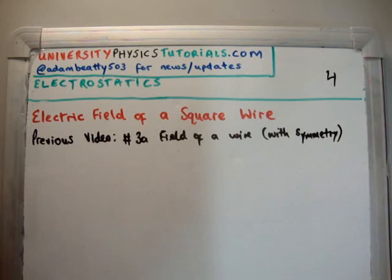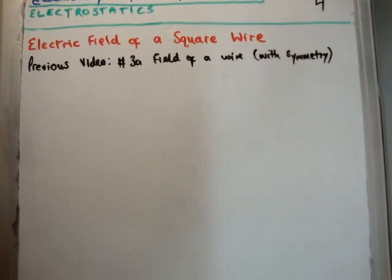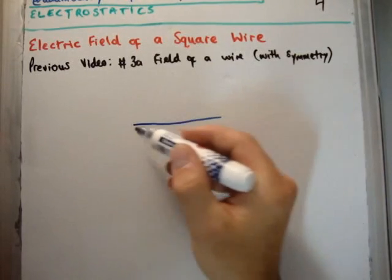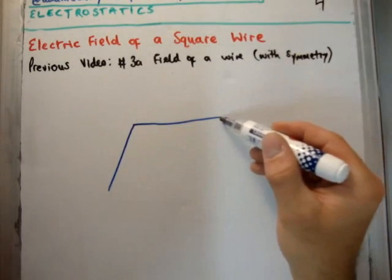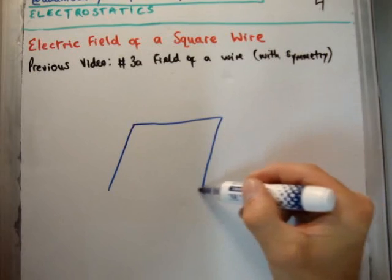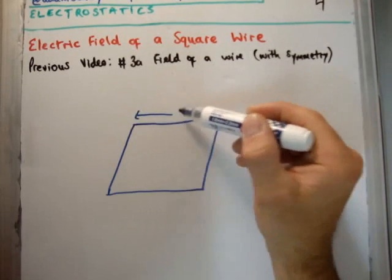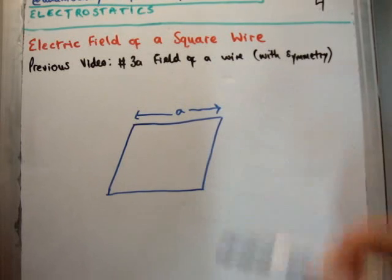So let's pose the problem for this particular video. So what we're talking about, and you'll have to excuse my drawings, we're talking about a square wire, 4 equal line segments with the length of each wire or each line segment being A.